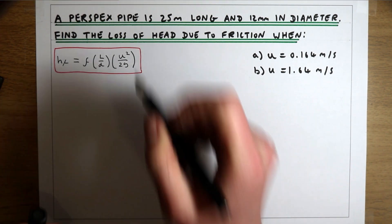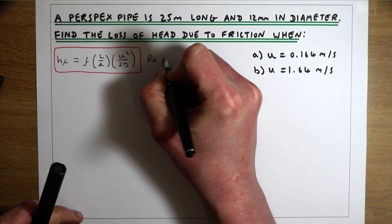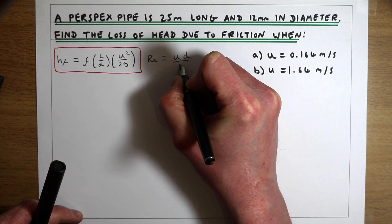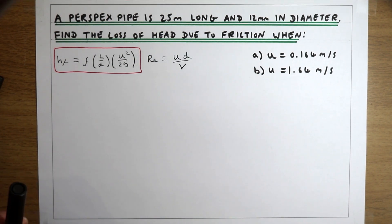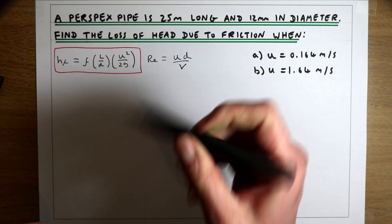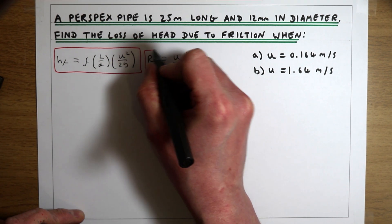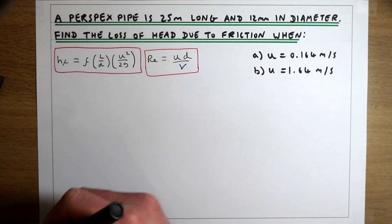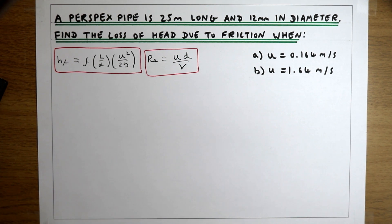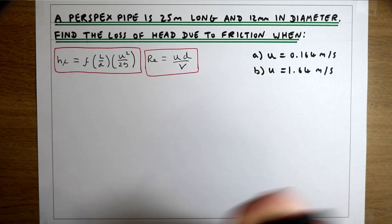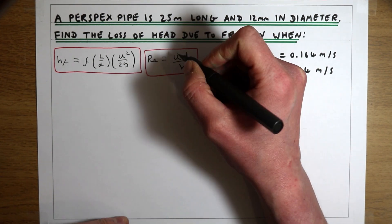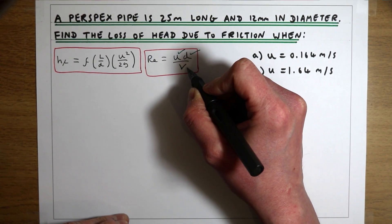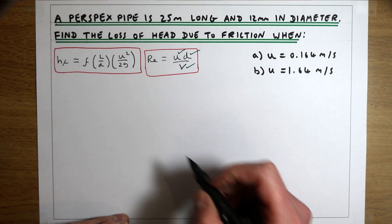We're also going to need the Reynolds number for this calculation. The Reynolds number is the velocity times the pipe diameter over the kinematic viscosity of water. We can calculate Reynolds number because we know the velocity, the diameter, and the viscosity of water.